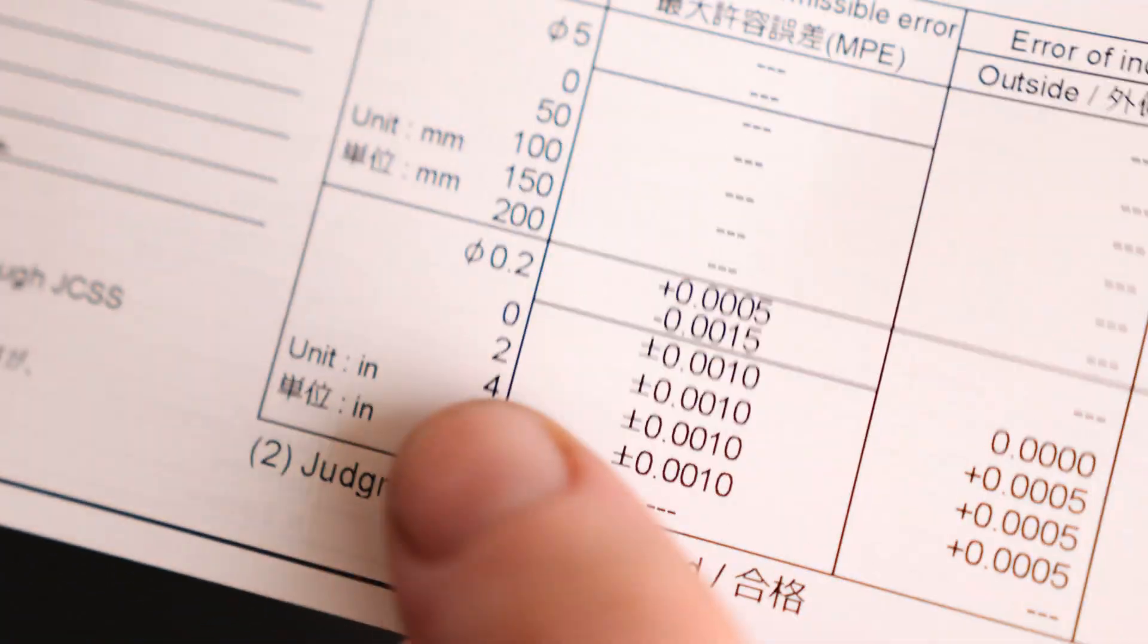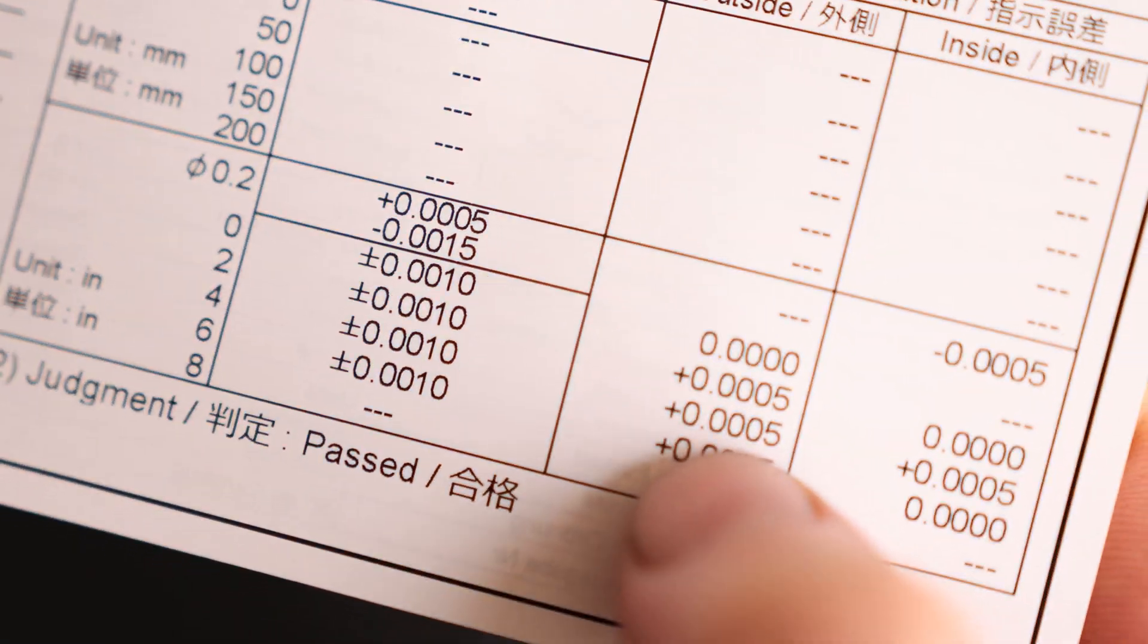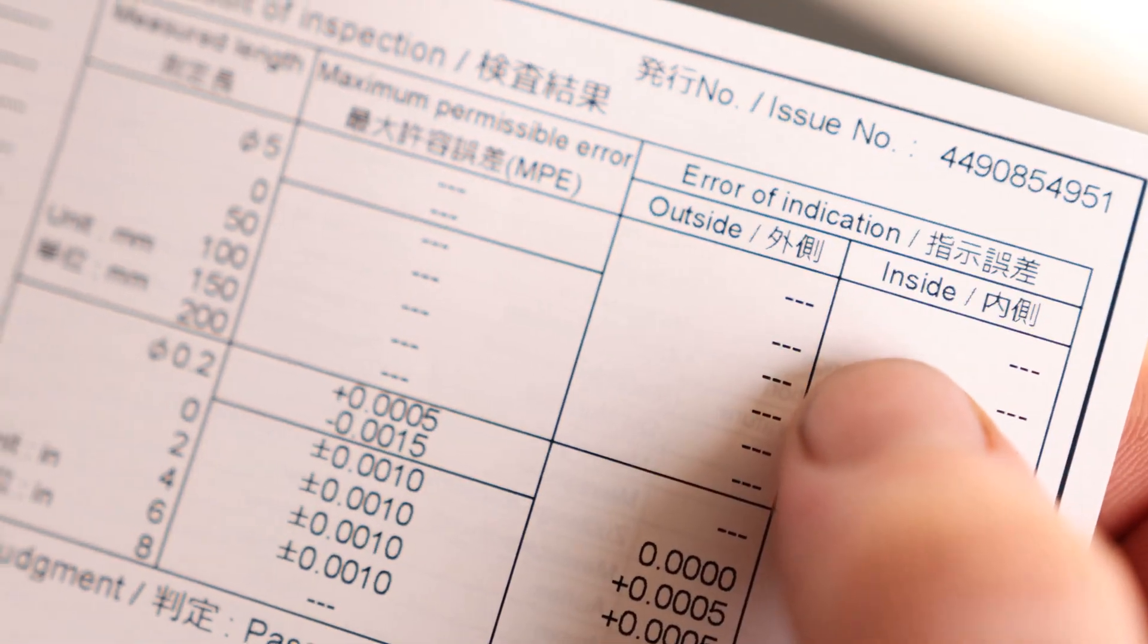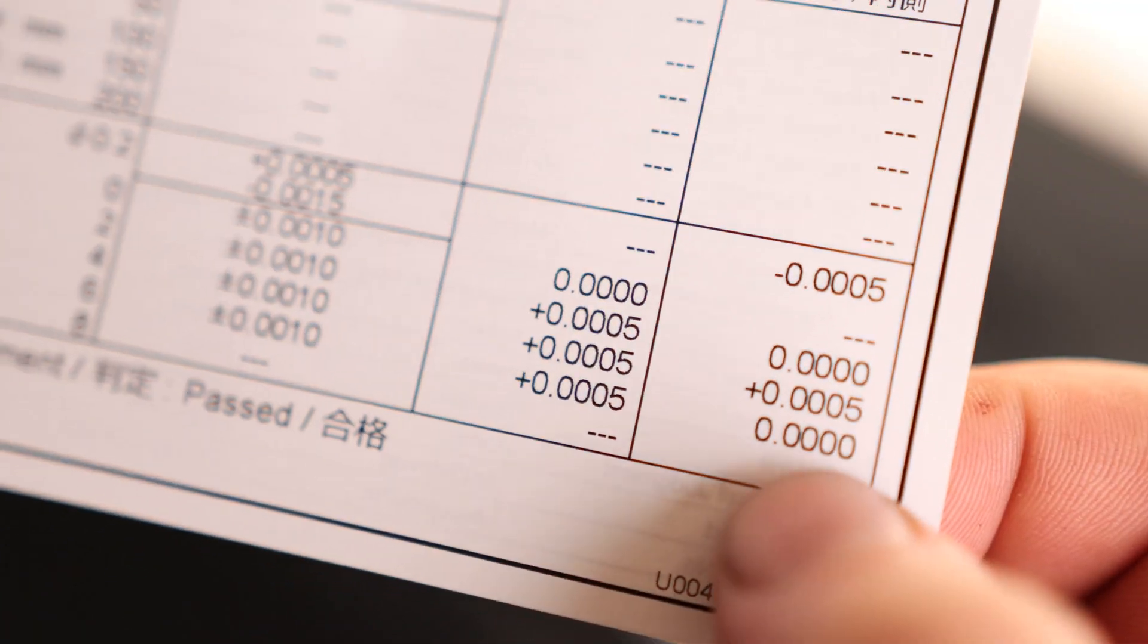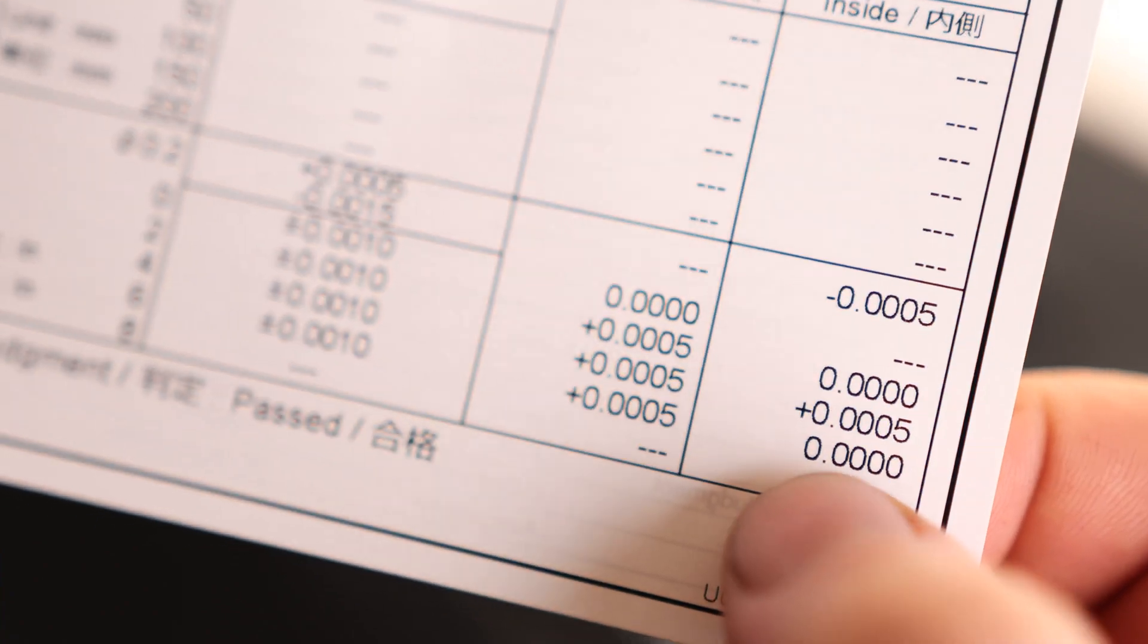For outside measurements at 2, 4, and 6 inches, we had half a thousandth positive. For inside measurements, we had half a thousandth positive at 4 inches, and everything else was dead on. So that is a very accurate caliper.